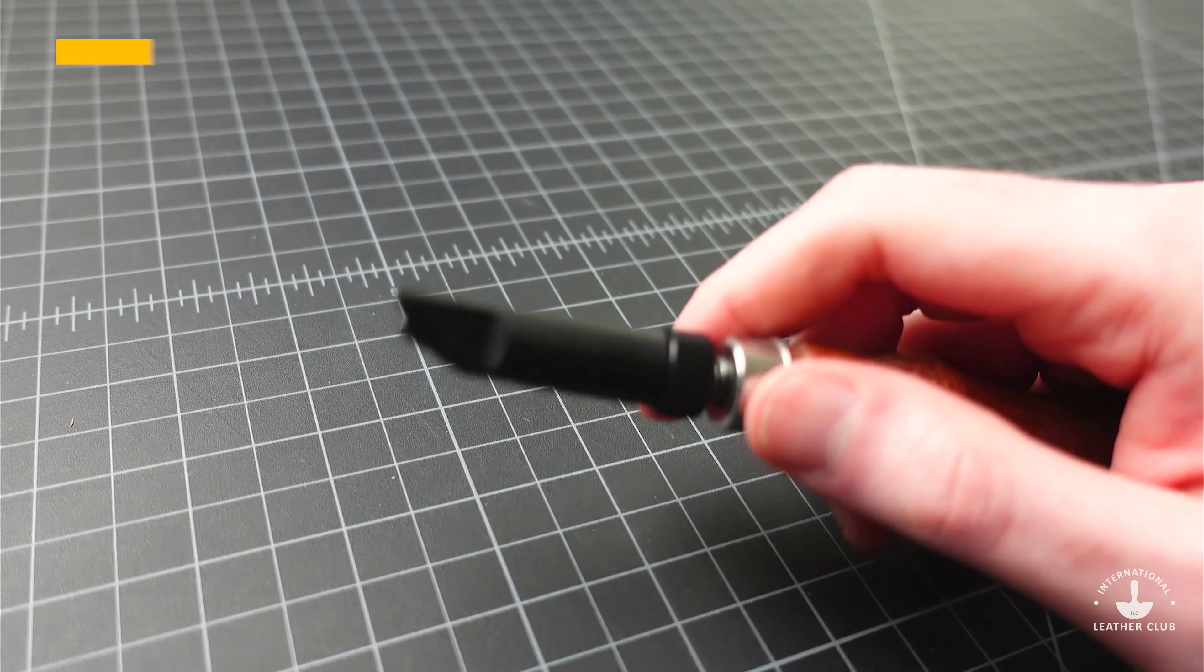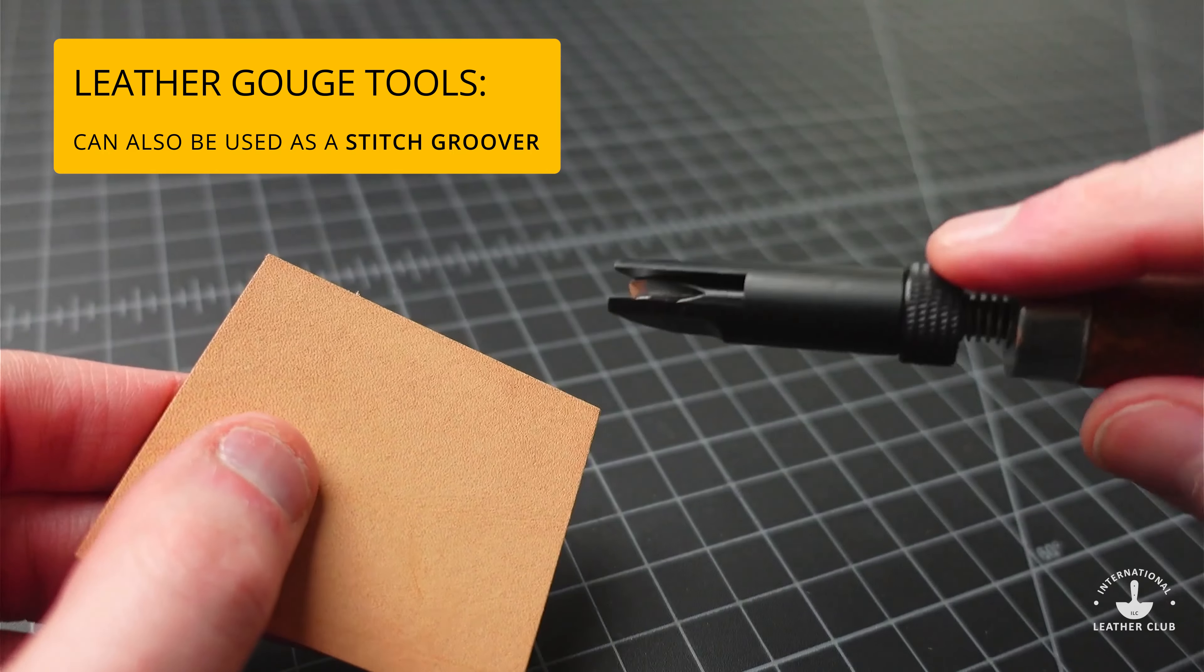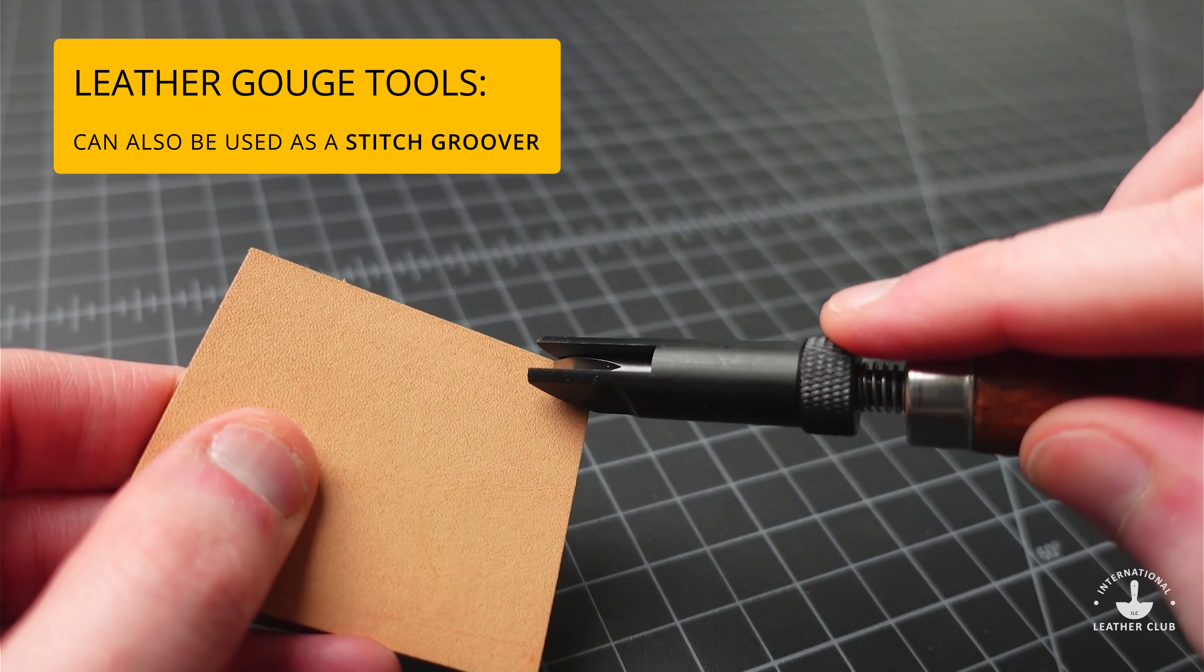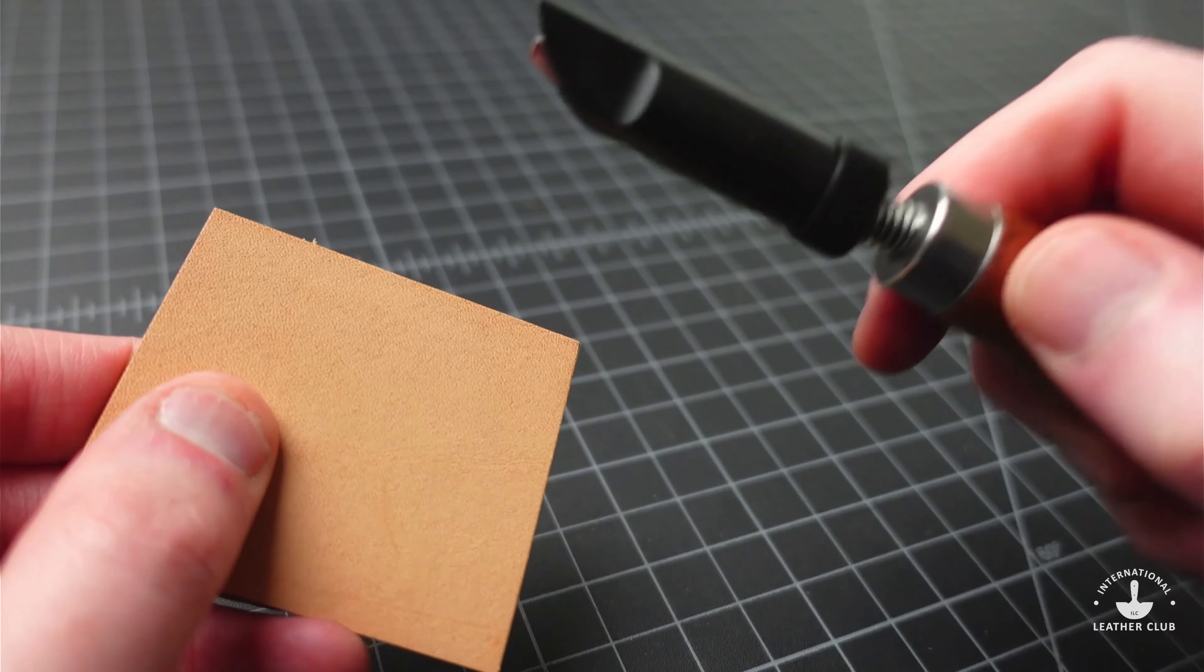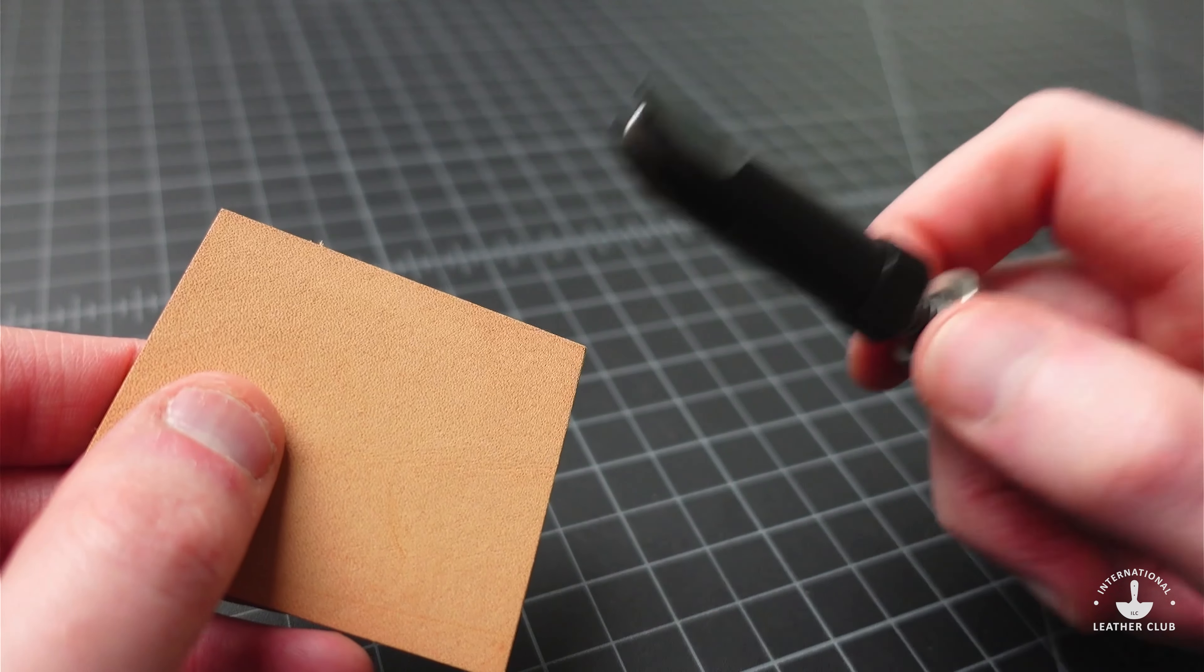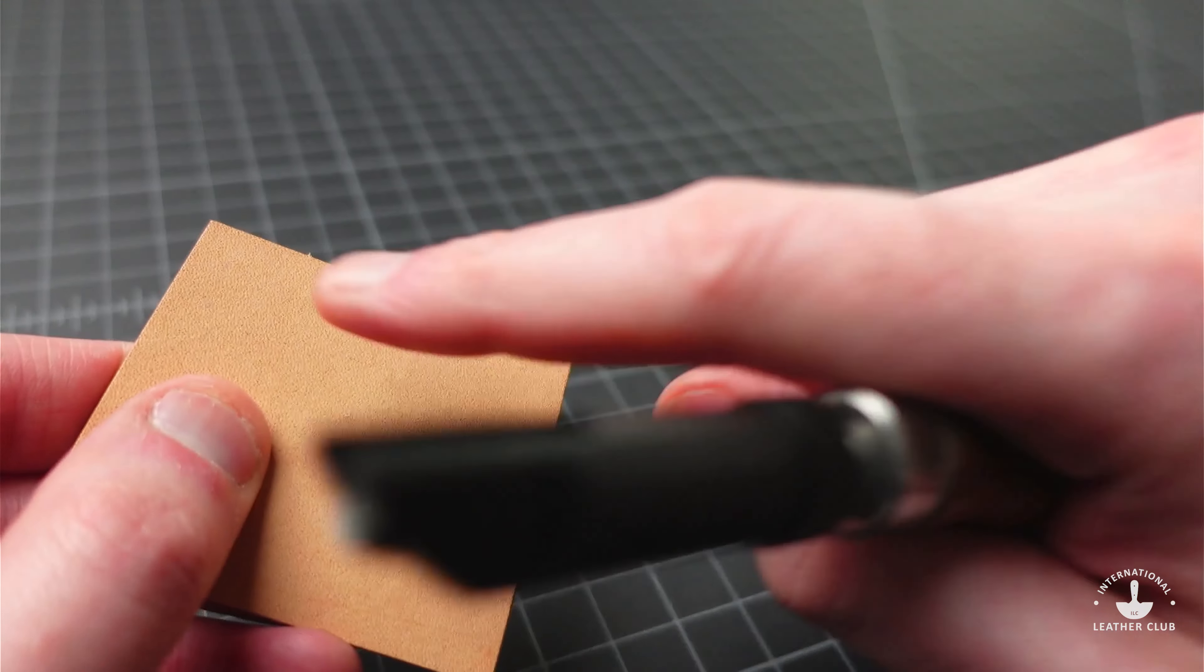Sometimes could also be used as a stitch groover. So if you're looking to add stitching lines to the edge of your leather, if you can do this in a consistent and even way, that can also be a substitute for a stitch groover. Wouldn't be the greatest in all cases, but if you're in a pinch and need to make a groove so your stitching can sit low and protected, this can be an option for that as well.